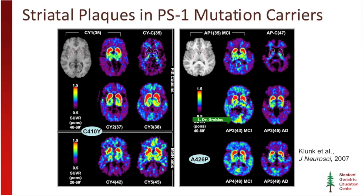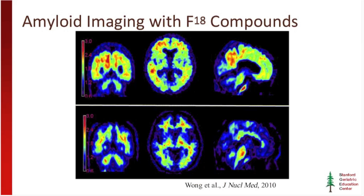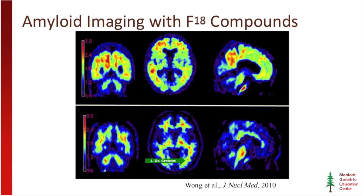A quick word on F18 compounds: one of the main limitations of Pittsburgh compound B is that it's a C11 compound, requiring an on-site cyclotron to make the radioactive tracer and use it quickly due to rapid decay. A number of groups have developed F18 compounds with a much longer half-life, making this technology far more widely available. One example is florbetapir. One thing you notice immediately is a lot of white matter binding even in the negative control scan — nonspecific white matter binding — which makes F18 amyloid imaging scans a little tougher to read than PIB scans.